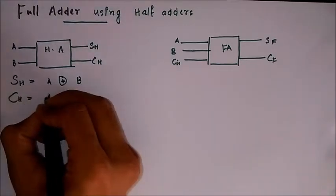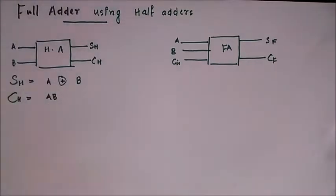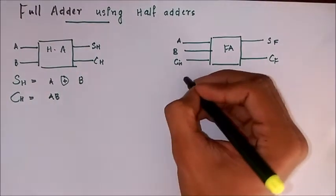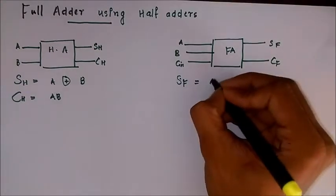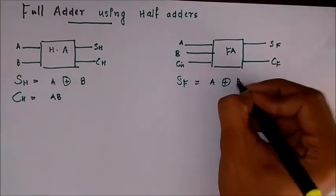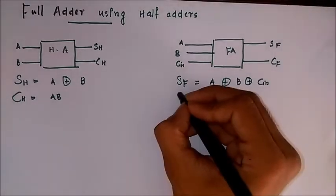Also the carry of the half adder is AB, that is passed through an AND gate. So similarly from previous discussions, we have sum of full adder as A XOR B XOR Cin.